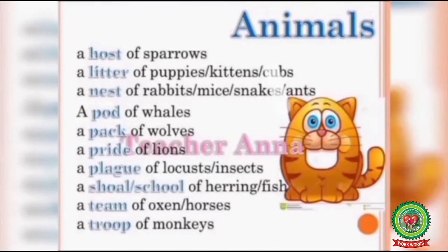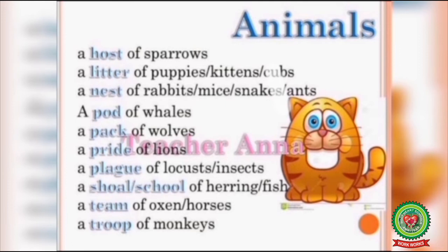Now, in the case of animals: a host of sparrows, a litter of puppies, a nest of rabbits, a pod of whales. Similarly, a pack of wolves means a group of wolves, a pride of lions means a group of lions, a plague of insects means a group of insects, a school of fish means a group of fish, a team of horses means a group of horses, and a troop of monkeys means a group of monkeys.